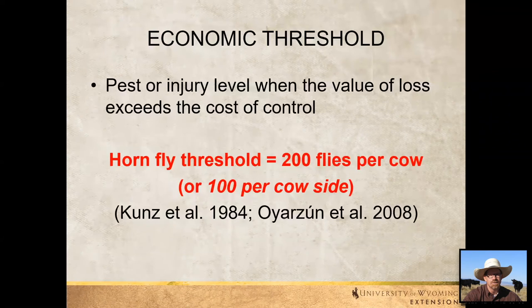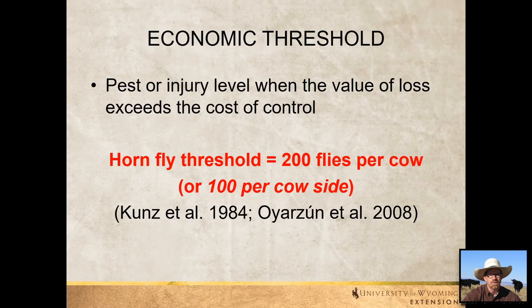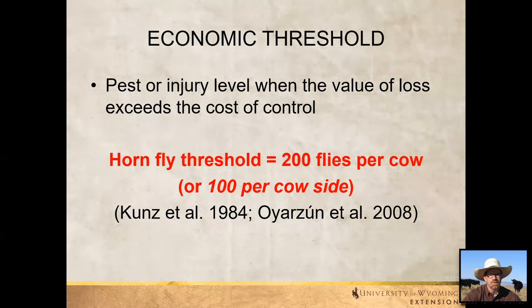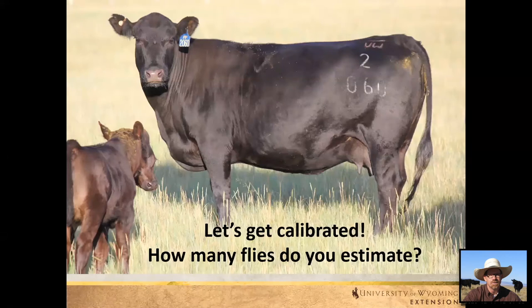For horn flies on cattle, the economic threshold — the pest injury level when the value of loss exceeds the cost of control — is estimated to be around 200 flies per cow, or just 100 flies per cow side. Often in research we take a picture of one side of the cow; if we see 100 on one side, we assume there's another 100 on the other side, giving 200 horn flies per cow total. Keep that number in mind as we visually estimate infestation levels on some cattle.